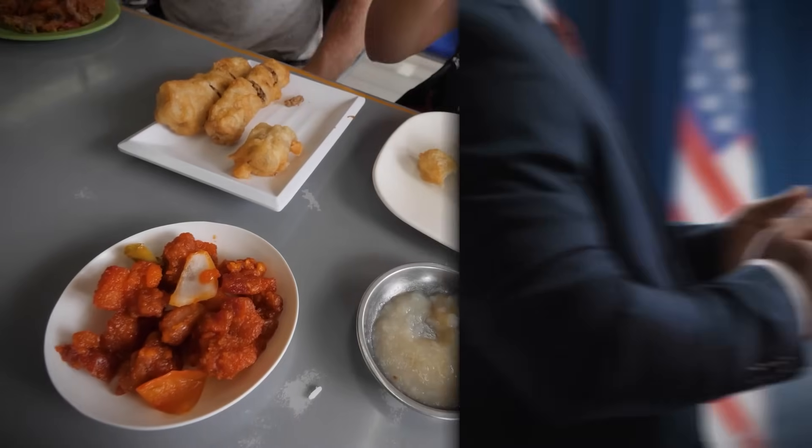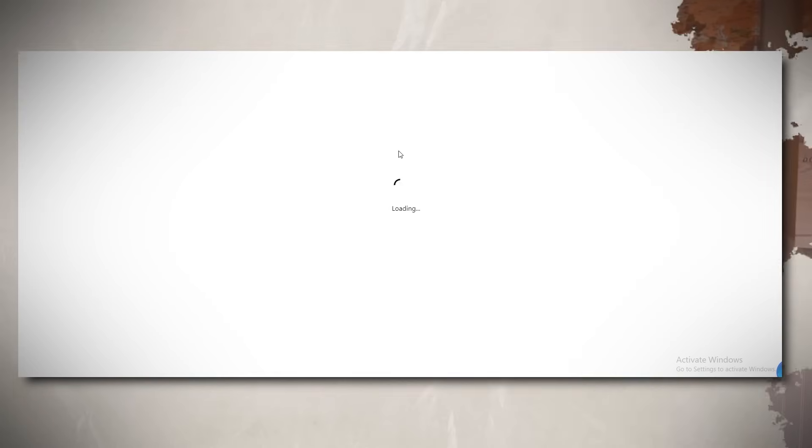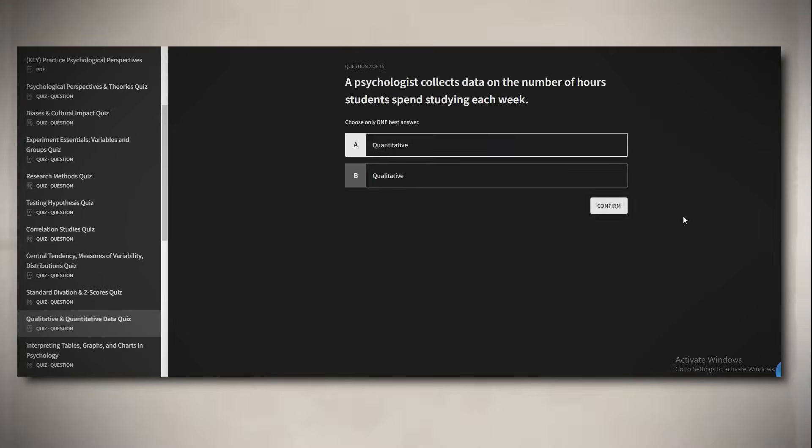For example, how would you rate the food at your school lunch? Or how good of a job do you think the president is doing? Now that was just a quick overview of these two concepts. If you do need more help with them, check out the free practice quiz in my Ultimate Review Packet.